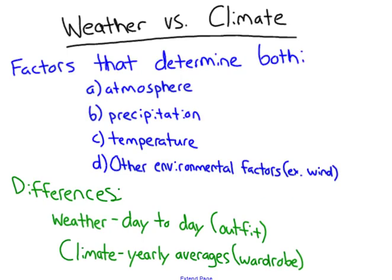Before we start talking about greenhouse gases, one thing I want to address is the difference between weather and climate. We use the term weather all the time, and we can actually use both factors to describe weather and climate — things like atmosphere, precipitation, temperature, and other environmental things like wind.